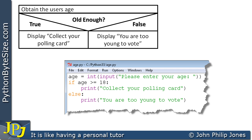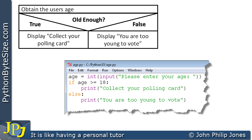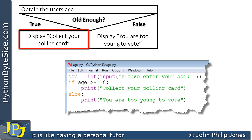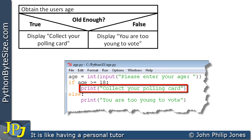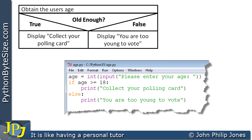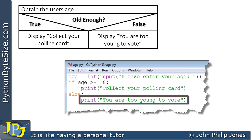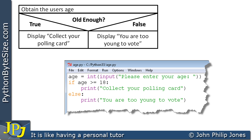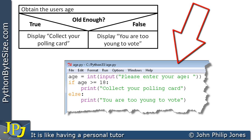Referring to the NS chart, we have the question 'old enough?' In Python this is: age greater than or equal to 18. If they are old enough, it's true, and the corresponding step in the NS chart is executed — that's the line 'print collect your polling card.' If their age is not greater than or equal to 18, that's false, and the other step in the NS chart executes — the corresponding code being 'print you are too young to vote.' We can now see the relationship between the algorithm as represented by the NS chart and the actual program implemented from it.